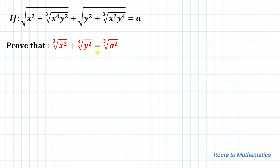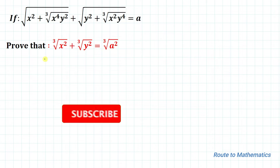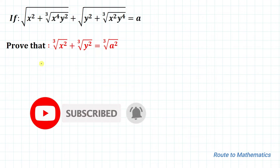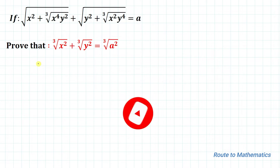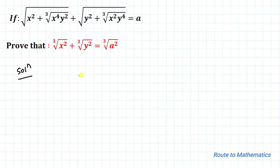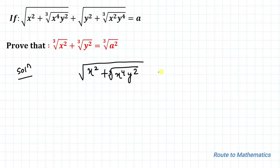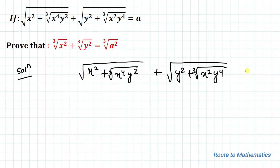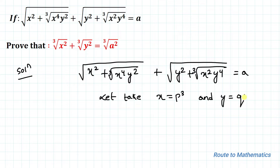So here we have a given equation and we are asked to prove this equation. Without any delay let's start the solution. The given equation is √(x² + ∛(x⁴y²)) + √(y² + ∛(x²y⁴)) = a. In the next step, let's take x = p³ and y = q³.